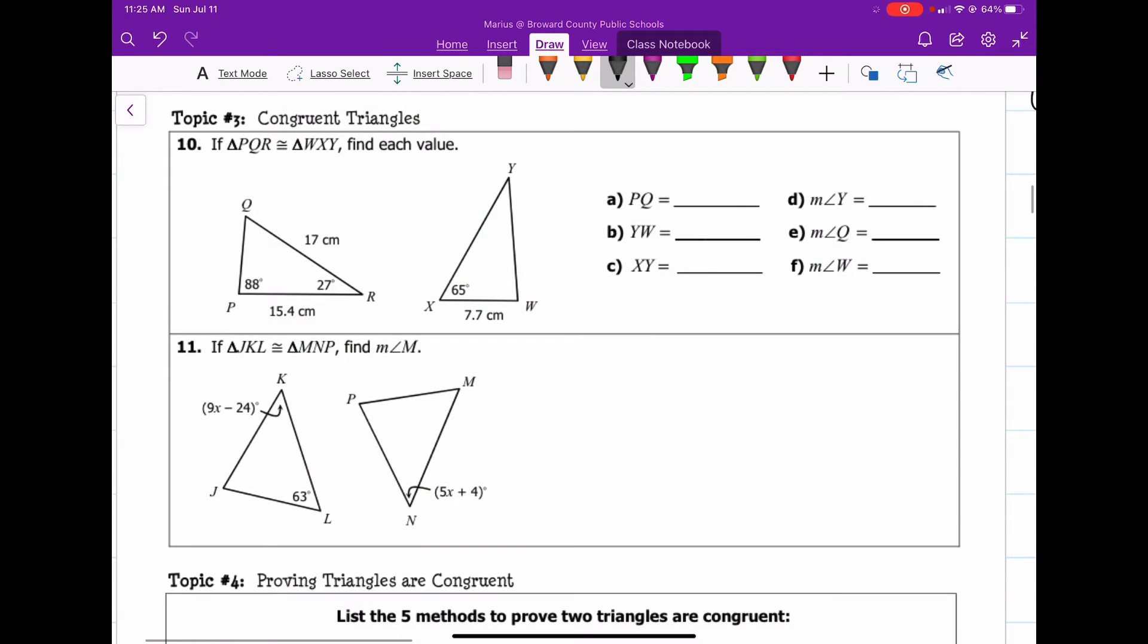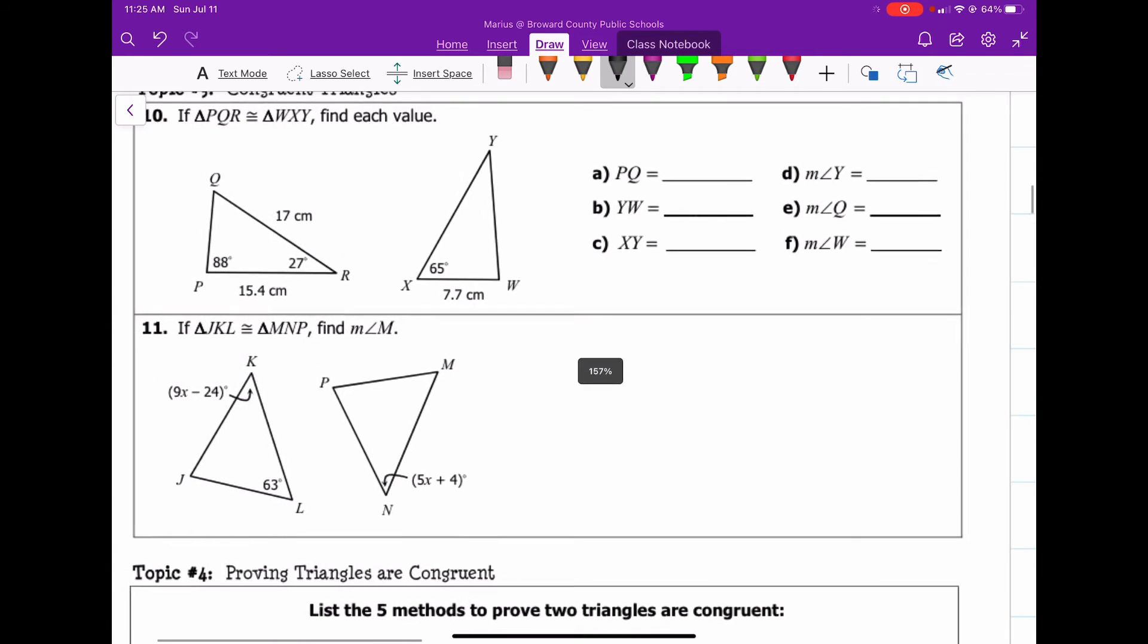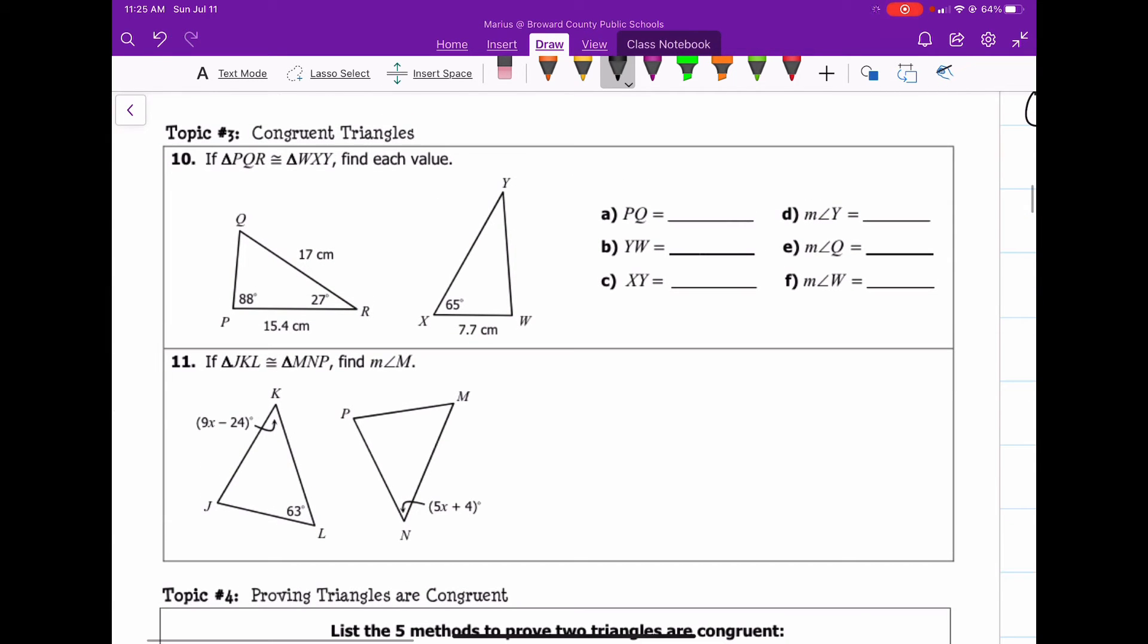For example, number 10 says if triangle PQR is congruent to triangle WXY, find each value. So what I mean, what I was saying earlier by stacking, this is what I was talking about. P, Q, R, and W, X, Y.